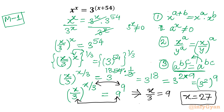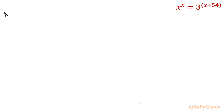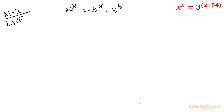Now Method number two, using the Lambert W function. Starting from x^x = 3^x · 3^54, I divide both sides by 3^x the same way as before, arriving directly at (x/3)^x = 3^54.